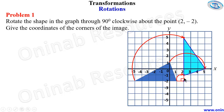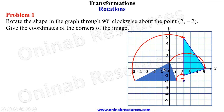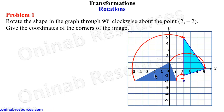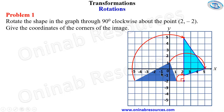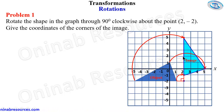If you are using tracing paper, you can place your paper here, draw the image, then turn it to trace it back. You turn and have your image. So this is the object and this is the image after rotation. That is the first part of the problem. Now we are to give the coordinates of the corners of the image.